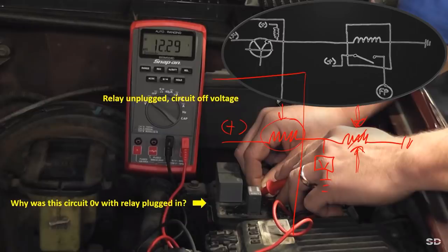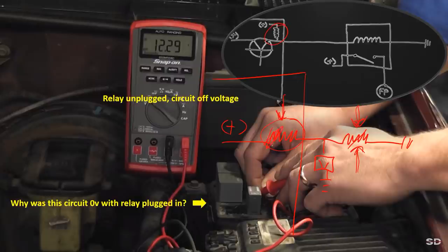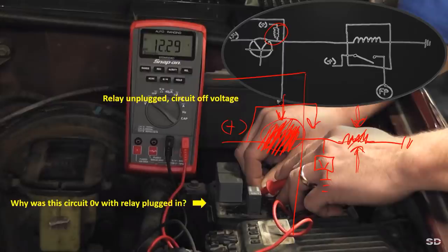If this internal resistor is super high resistance compared to the external one, most of the pressure - if not all - is going to drop across that first one. The second one just allows that current flow to trickle out unrestricted because there's so little current there it doesn't cause any pressure rise. That's why with the relay plugged in, we have zero volts in that location - it comes down to the two resistors: a super high one inside and a super low one outside.